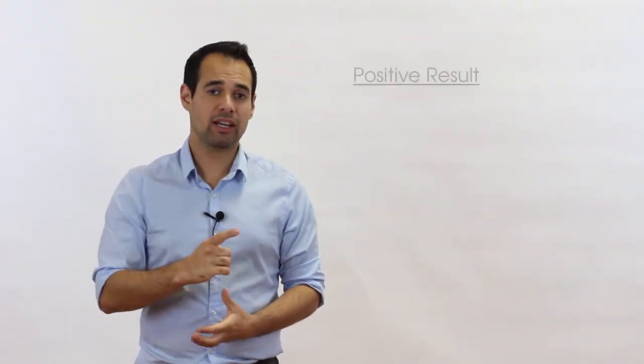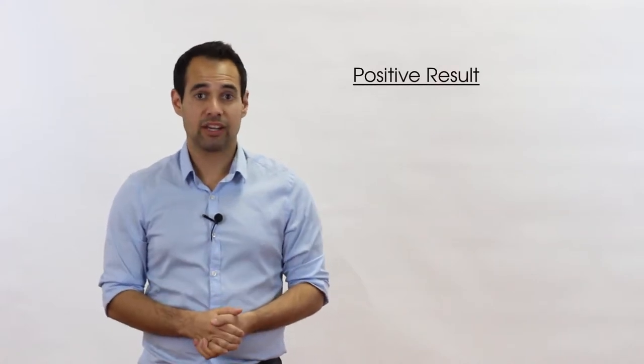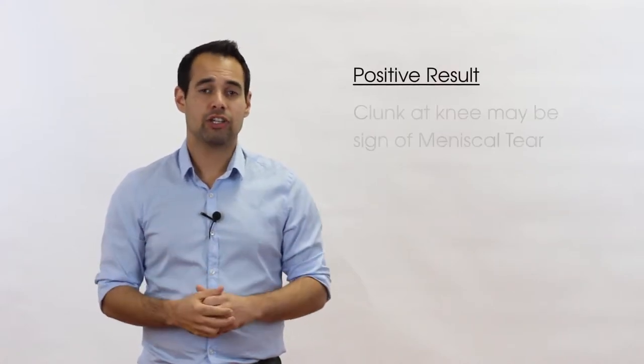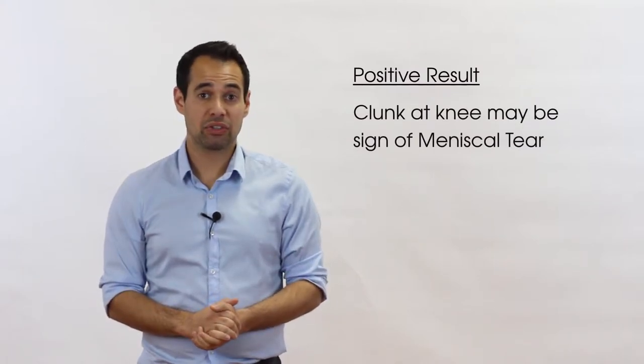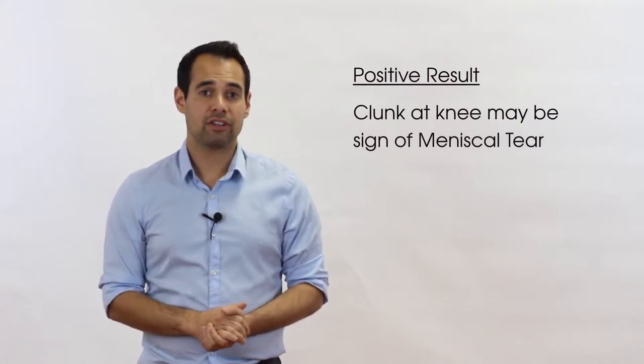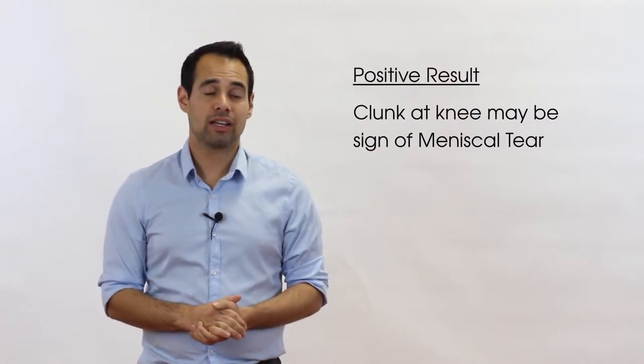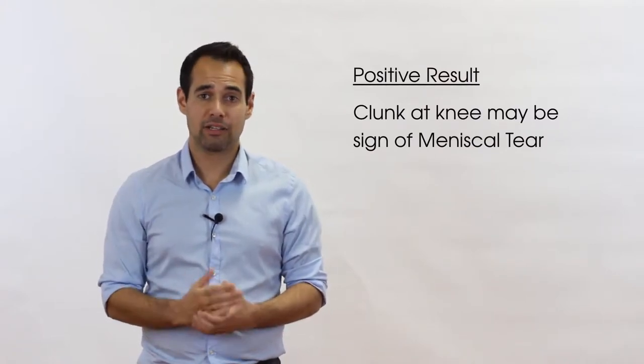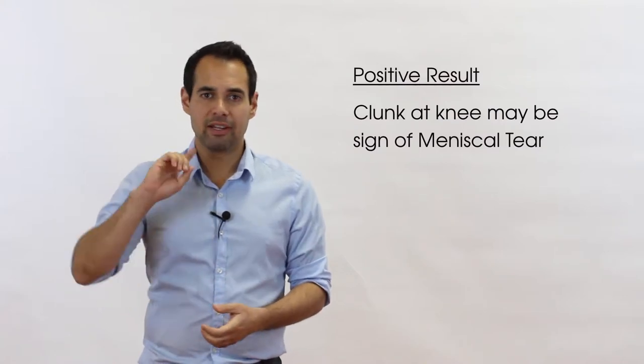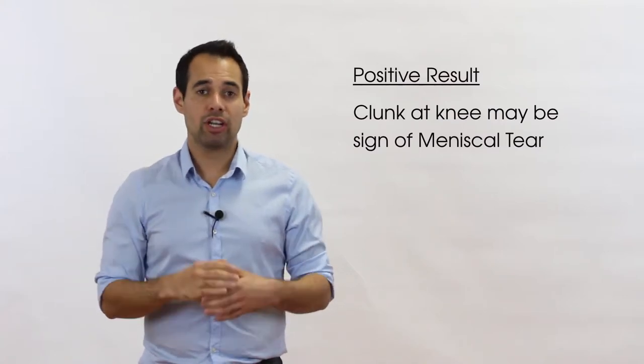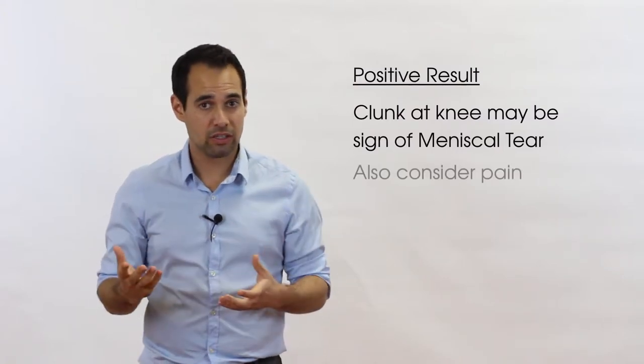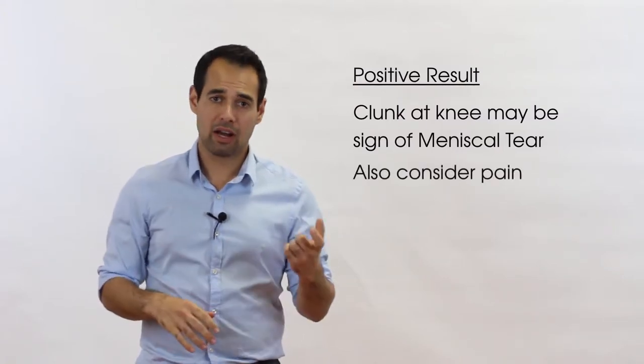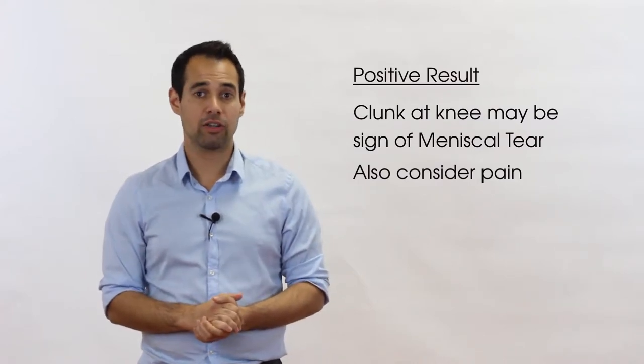What is the positive result in this test? Well, as we said earlier, principally we're looking at the meniscus. And so if you hear a clunk during this test, then that might indicate to you that your patient has a meniscal tear. That might give you enough evidence to ask one of your specialists to fill out a form for an MRI scan to investigate it further. There's a couple of other things to consider. Certainly, if your patient has a meniscal tear, this test may be painful for them. So consider the pain aspect of things, but ultimately for the meniscus, it's the clunk that you're looking for.